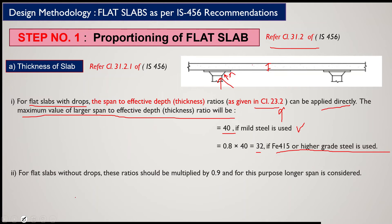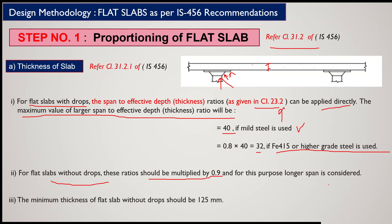The second point is for flat slabs without drops: the span-to-effective-depth ratio should be multiplied by 0.9, and again the longer span is considered. The third point is that the minimum thickness of a flat slab without drop should be 125 mm. These are the three guidelines from IS456 for selecting slab thickness.